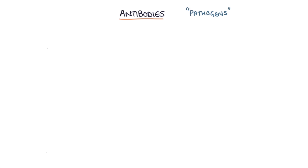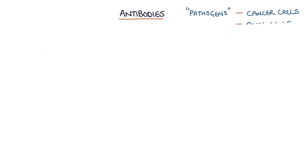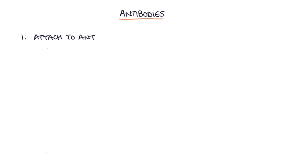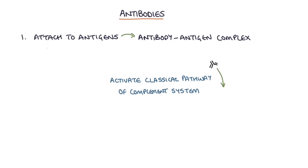So how are these antibodies useful in fighting off disease? Antibodies help the immune response in a variety of different ways. As we go through these different ways, we're going to talk about pathogens, but we can also mean cancer cells or cells of the person's own body in an autoimmune condition. Remember, antigens are just proteins and don't necessarily have to be from pathogens. Firstly, antibodies attach themselves to the antigen and become an antibody-antigen complex, and these complexes activate the classical pathway of the complement system, which leads to the destruction of pathogens.